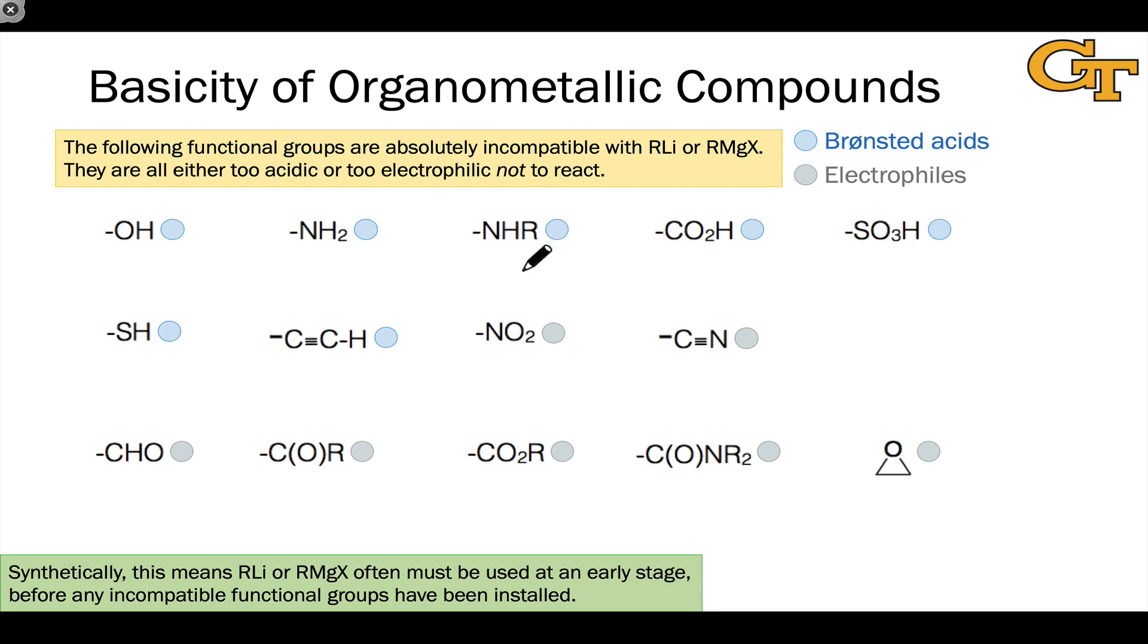Because organolithiums and Grignard reagents are so basic, there's a very long list of functional groups that are absolutely incompatible with these reagents. In other words, they will react with these reagents either as Bronsted acids or as Lewis acids. Sometimes we want this to occur, and that's totally fine, but when we don't want it to occur, these reactions can be problematic side reactions that prevent what we want to happen from happening.